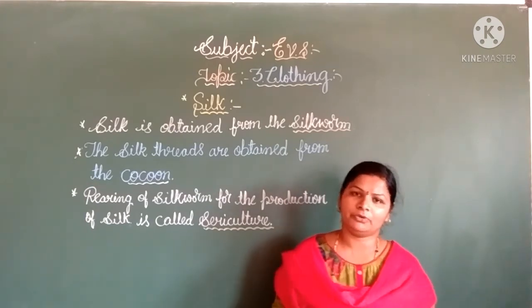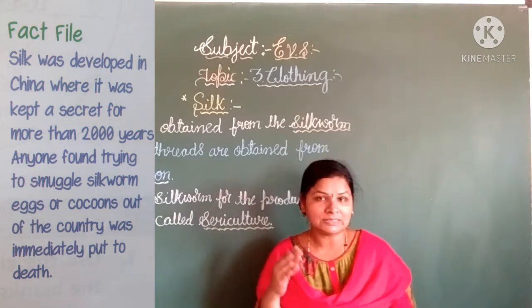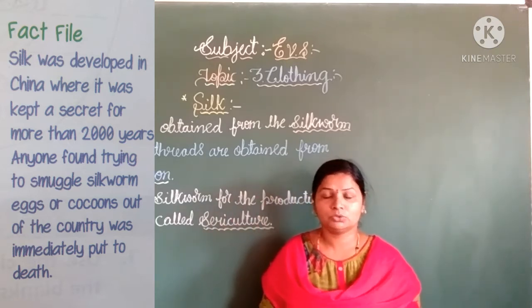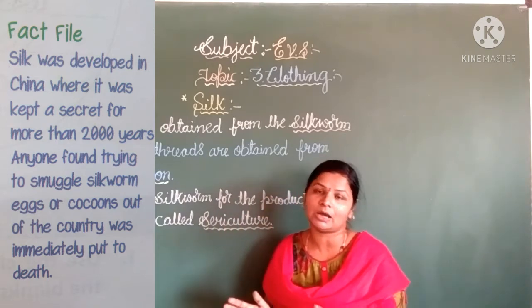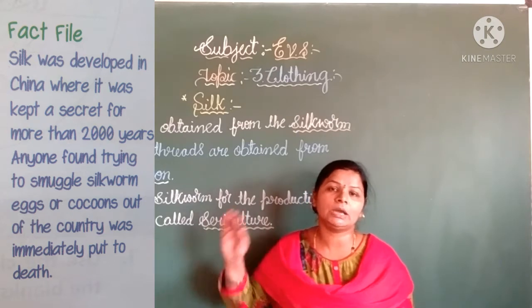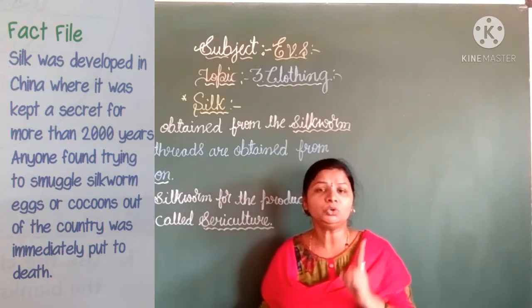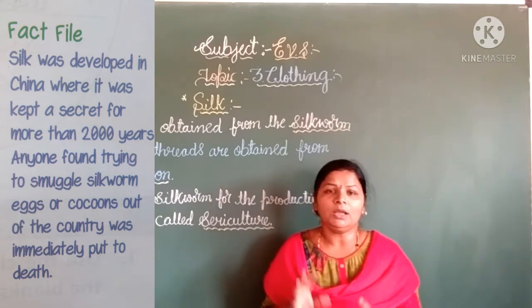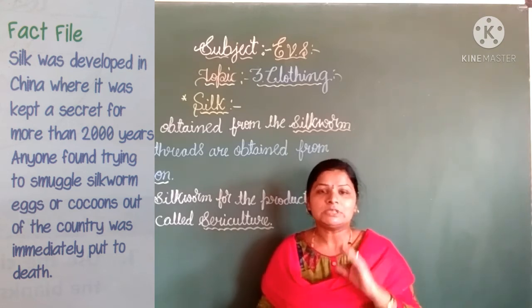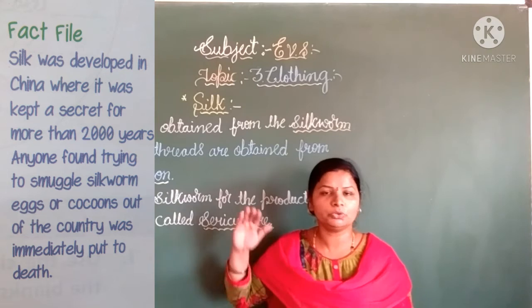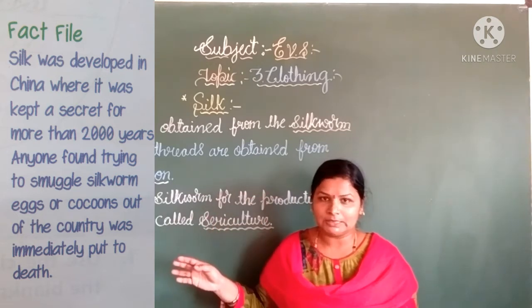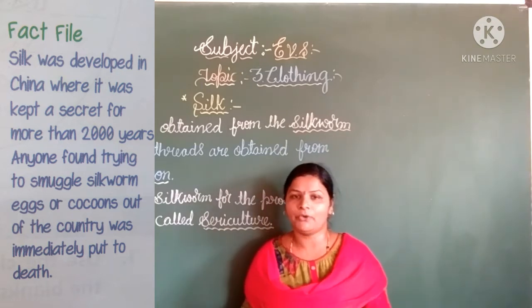In your textbook, there is a fact file. Silk was developed in China, where it was kept secret for more than 2000 years — secret about the silk, silkworms, and cocoons. Later, one day, a man wanted to smuggle cocoons and silkworms to another country. Someone found out immediately and that person was put to death.